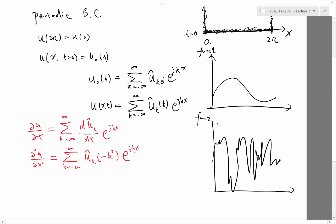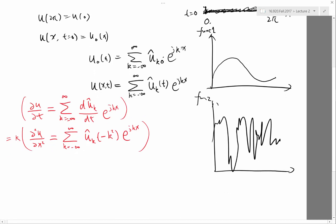Now, it's time to match the terms, right? We know that this thing equal to kappa times this thing. So we know that du hat k dt, that's the nice thing about Fourier series, right?